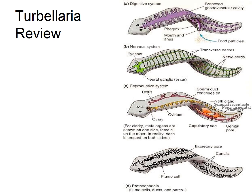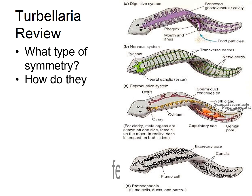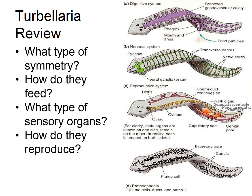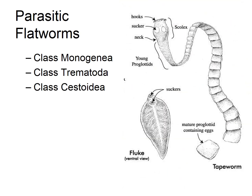Quick review of the turbellarians: what type of symmetry do they have? How do they eat? What type of sensory organs do they have? How do they reproduce? These are things for you to remember and go back over. Now, parasitic flatworms — the fun section. There are a few different classes: Class Monogenea, Class Trematoda, and Class Cestoidea.